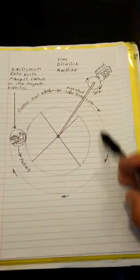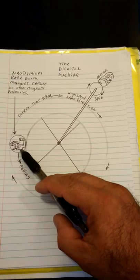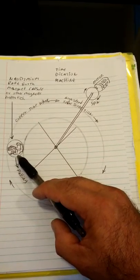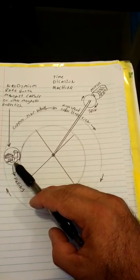Using a copper tubing all the way around, made of copper, we have a neodymium rare earth magnet capsule or other magnetic properties.